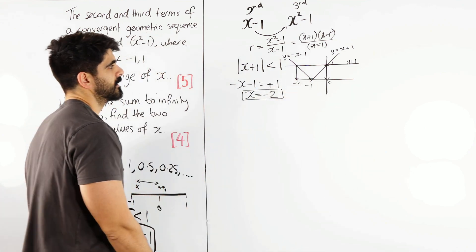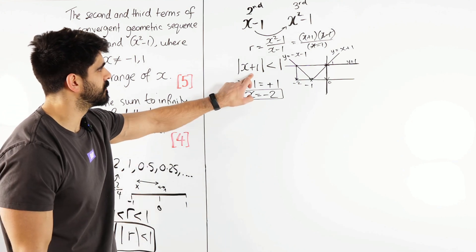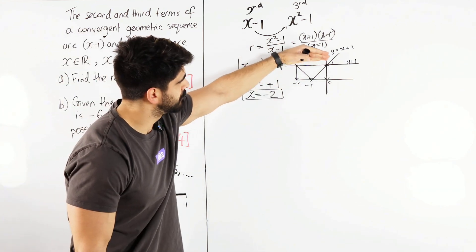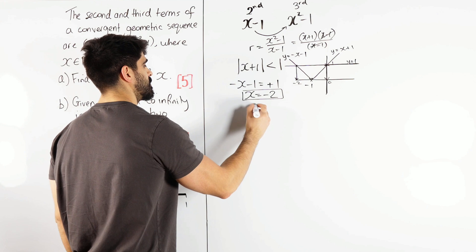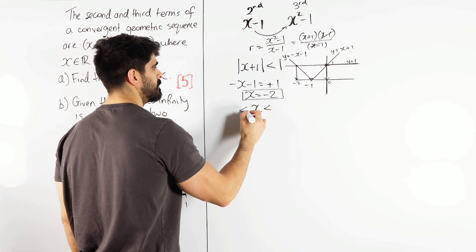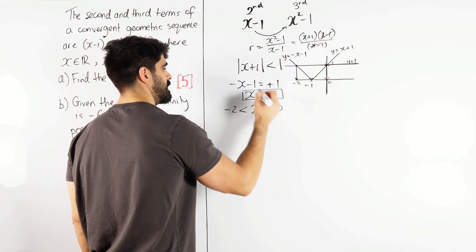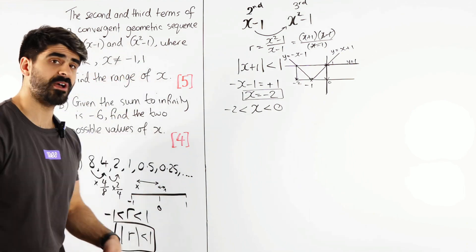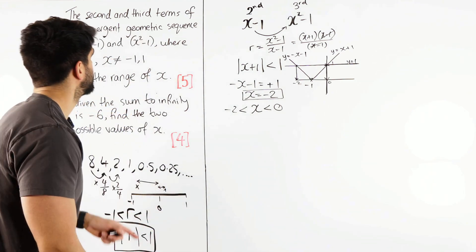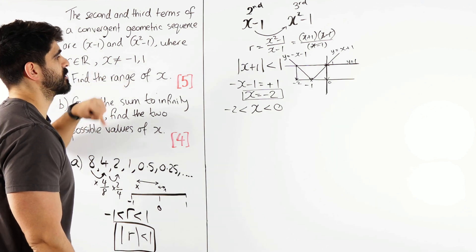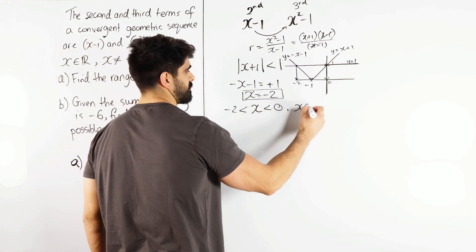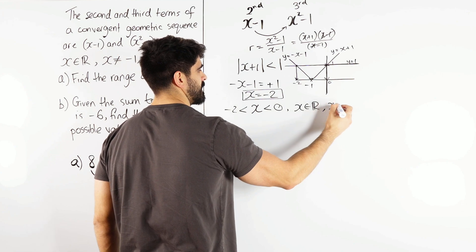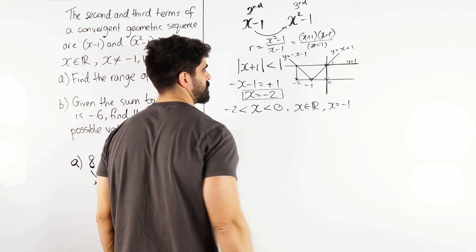And then we said okay, when is the v-shape below 1? It's below 1 between minus 2 and 0. So x is between minus 2 and 0. However, what else did we say? We said x cannot equal minus 1. So we just need to include that here. So we could say x is a real number and x cannot equal minus 1.